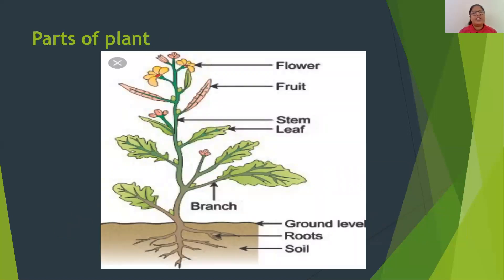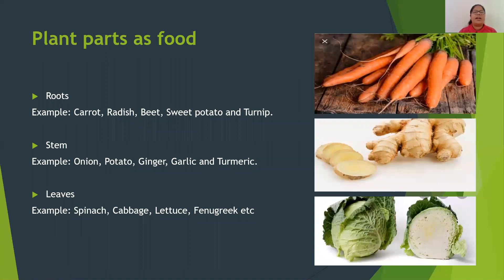The first source of food is plants. Let us study the parts of plants. Now let us see the plant parts that are used as food. The first plant part used as food is roots. Some plants store their food in the roots — these are termed as modified roots. Examples of roots we eat are carrot, radish, beet, sweet potato, etc.